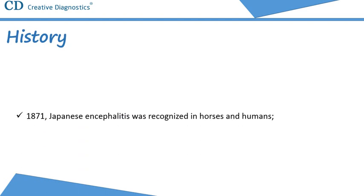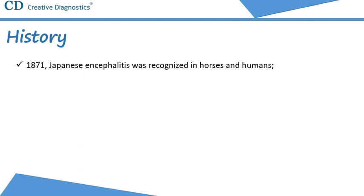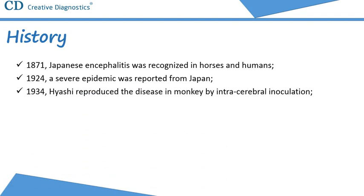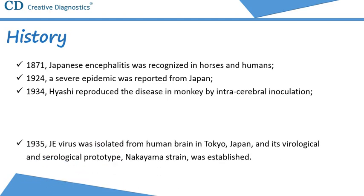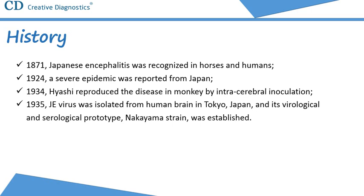Japanese encephalitis was recognized in horses and humans as early as 1871. In 1924, a severe epidemic was reported from Japan. In 1934, Hiyoshi reproduced the disease in monkey by intracerebral inoculation. In 1935, Japanese encephalitis virus was isolated from human brain in Tokyo, Japan, and its virological and serological prototype, the Nakayama strain, was established.